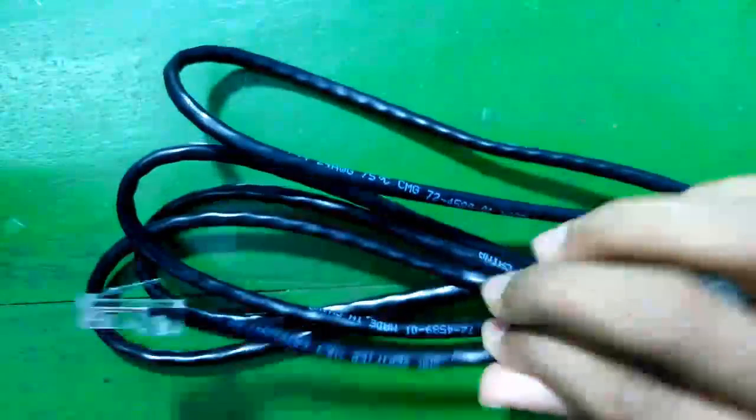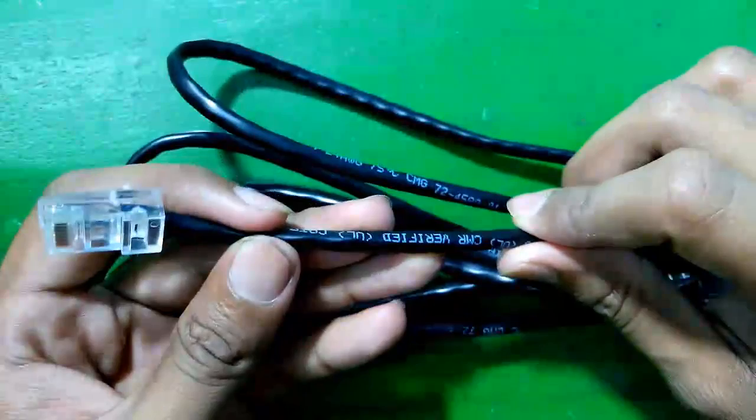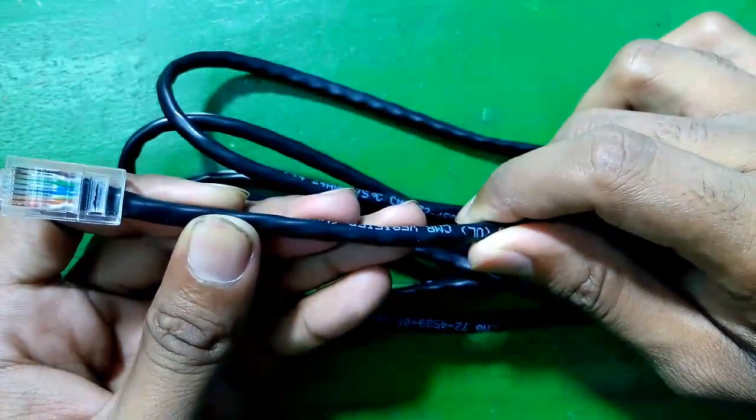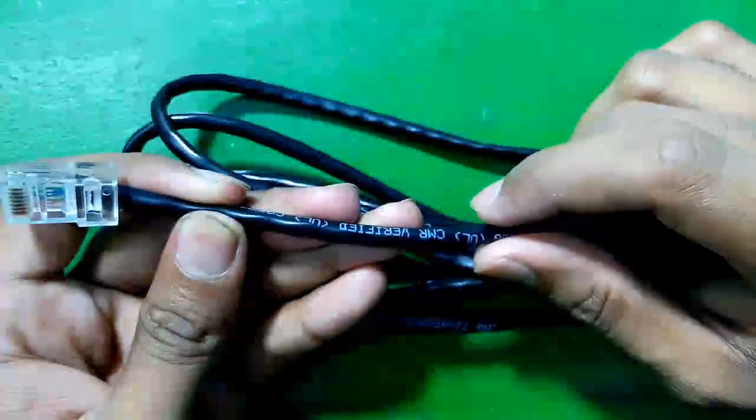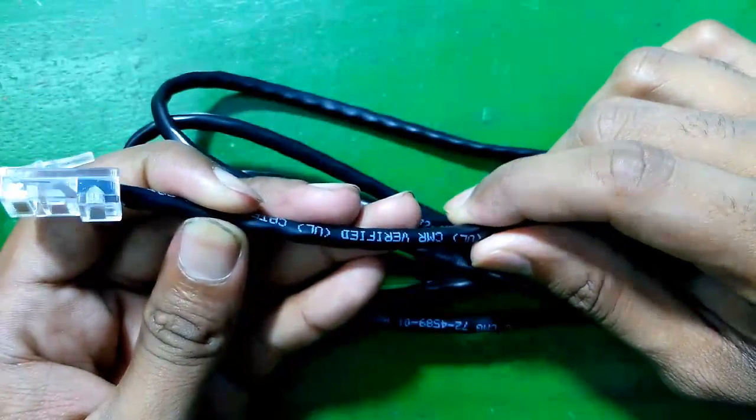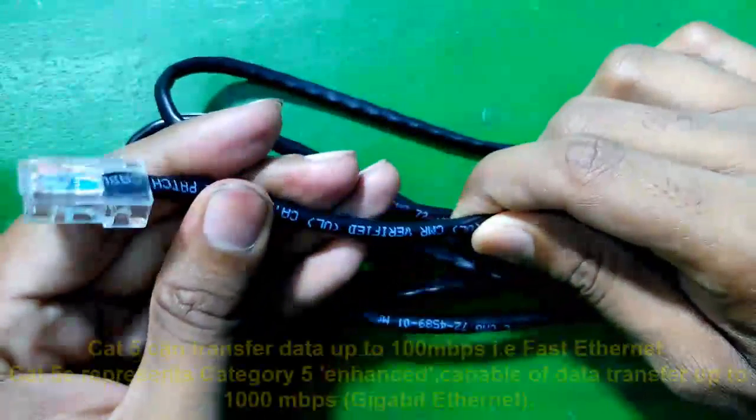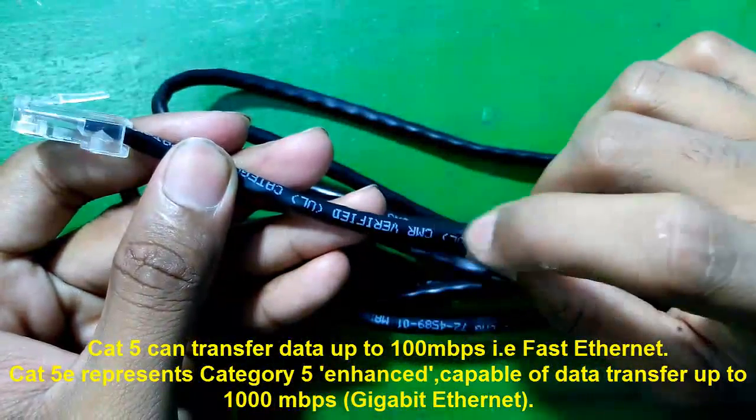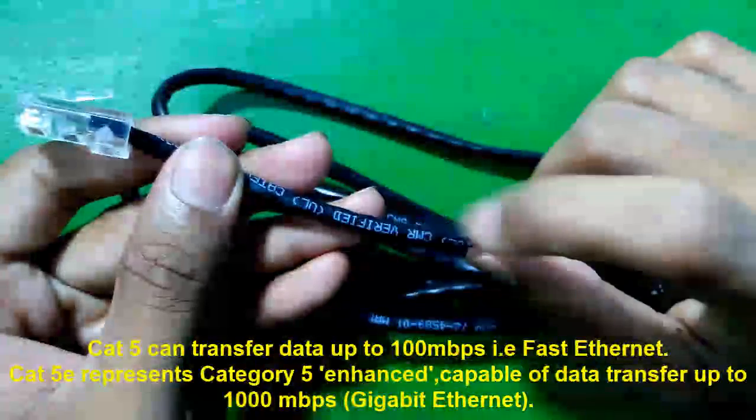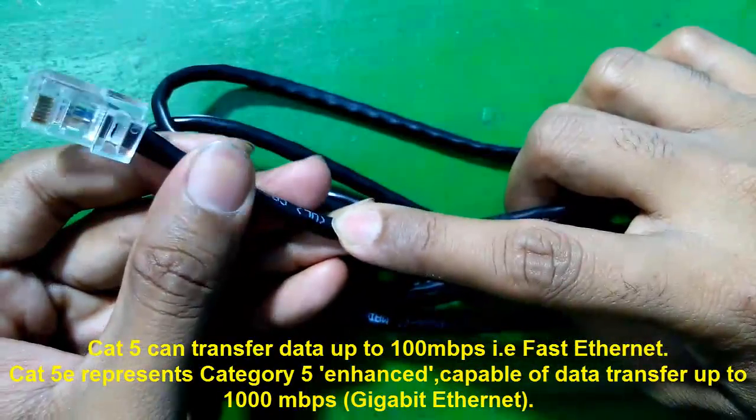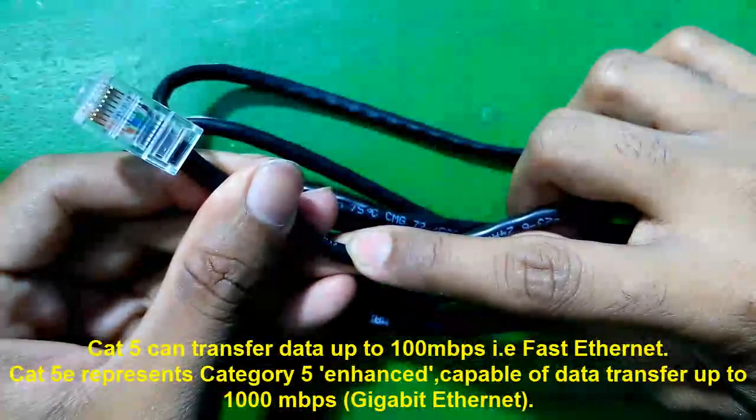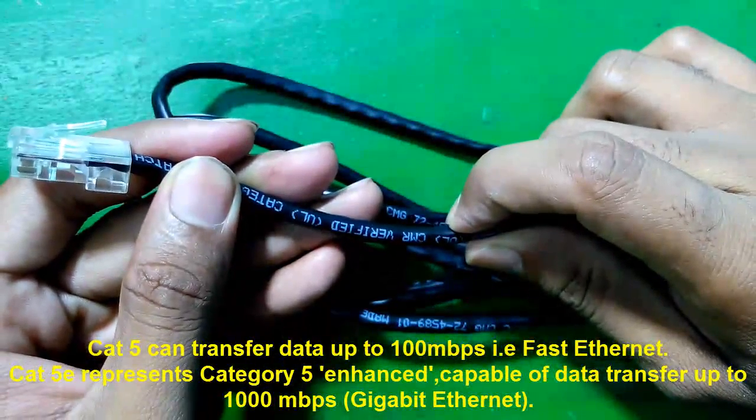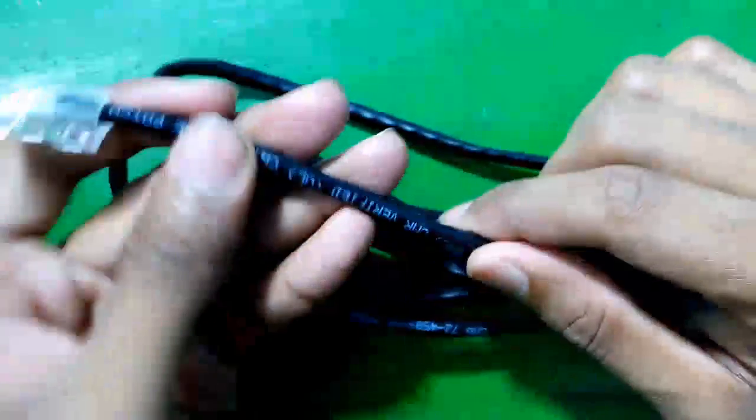And now cables can be of various type like CAT5, CAT5E, CAT6, etc. So here the CAT denotes the category and the number 5, 6 or 5E denotes the version. So CAT5 means category 5 or category version 5. So CAT5 is of two types. One is CAT5 and another is CAT5E. So what is the difference between them? CAT5 cable can transfer data up to 100 Mbps. That is fast Ethernet.